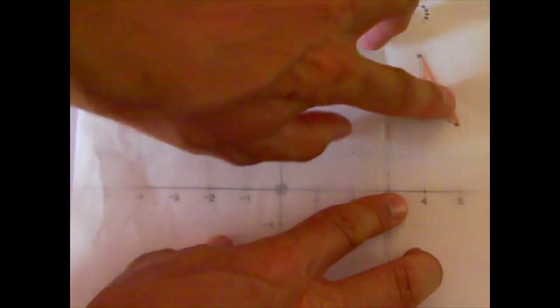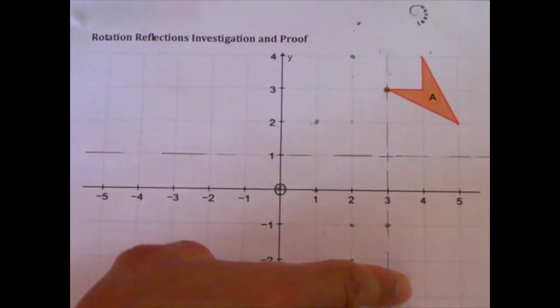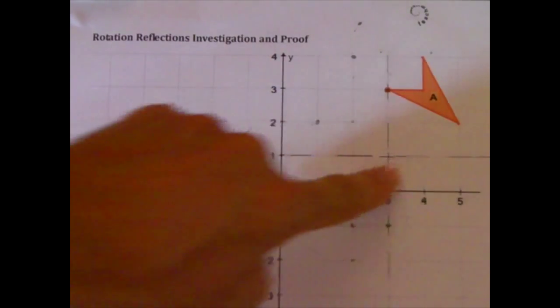I've traced around the shape, my original object. I've put in two lines that I want to be the mirror lines. One vertical, one horizontal.